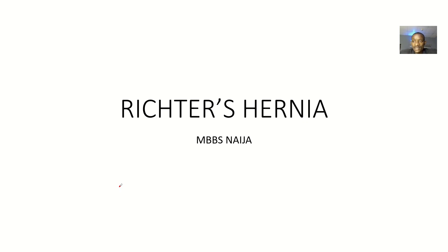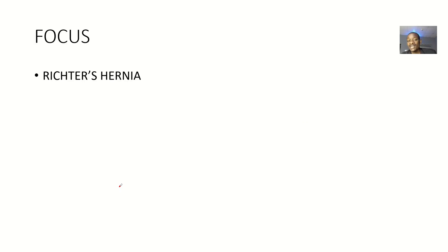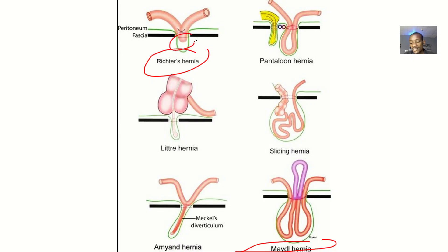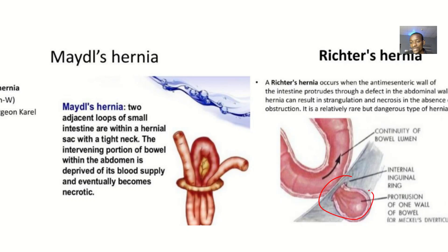There is actually some classification of hernia based on the anatomy and the parts of the intestines involved. We have the intussusception type, where the intestines are telescoping on each other. Then we have Richter's hernia, where just a part of the intestine is going through, but the other parts of the lumen are still free and there is continuity of bowel activity.